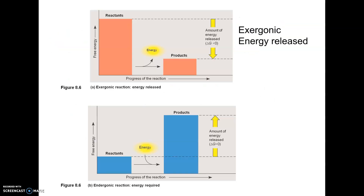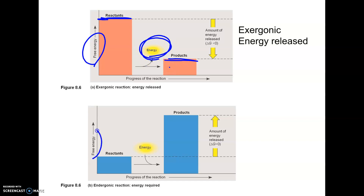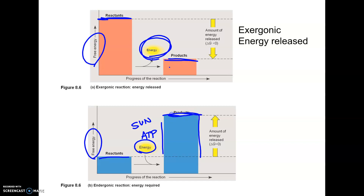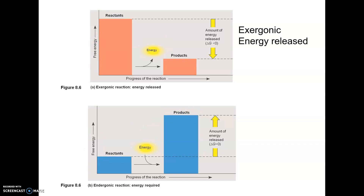Here's a picture. In the exergonic reaction, notice free energy — there's less of it in the products because energy was released. In the endergonic reaction, energy comes in; in our cells, ATP might be the provider of that, or in photosynthesis, sunlight is the provider. Energy has to go in, and the products end with more free energy than the reactants had.